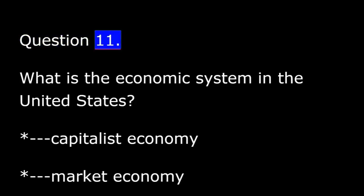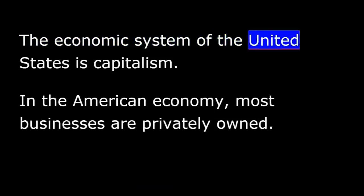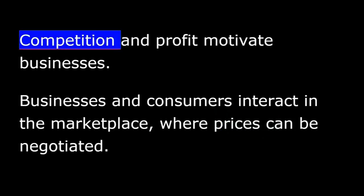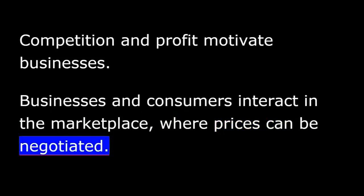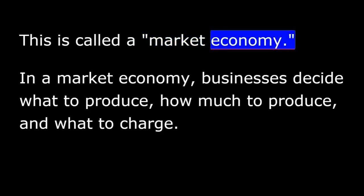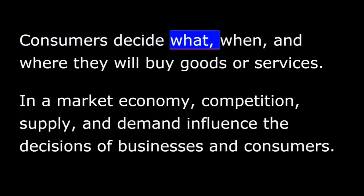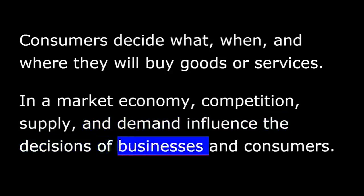Question 11. What is the economic system in the United States? A capitalist economy or market economy. The economic system of the United States is capitalism. In the American economy, most businesses are privately owned. Competition and profit motivate businesses. Businesses and consumers interact in the marketplace where prices can be negotiated — this is called a market economy. In a market economy, businesses decide what to produce, how much to produce, and what to charge. Consumers decide what, when, and where they will buy goods or services. Competition, supply, and demand influence the decisions of businesses and consumers.